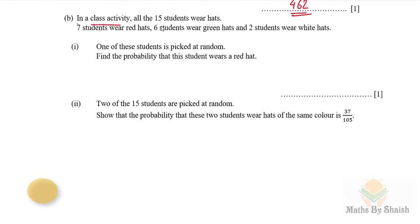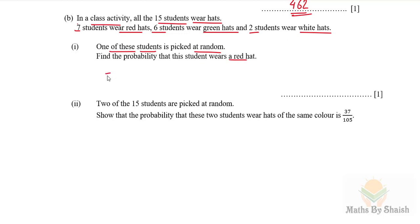Part B(i): 15 students wear hats — 7 red, 6 green, 2 white. One student is picked at random. The probability that this student wears a red hat is 7/15.